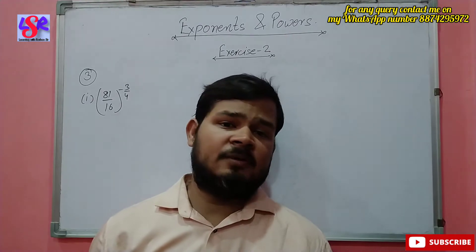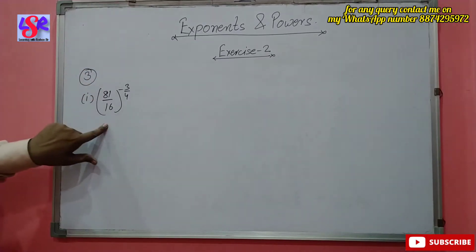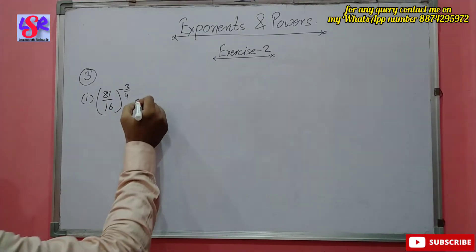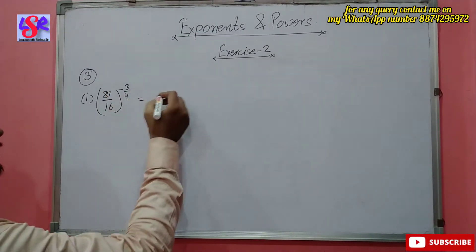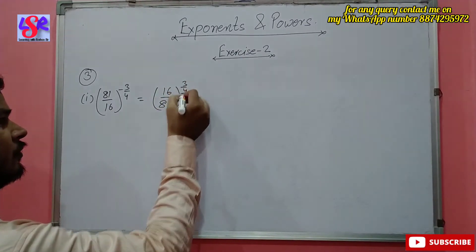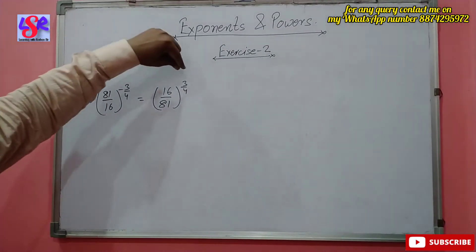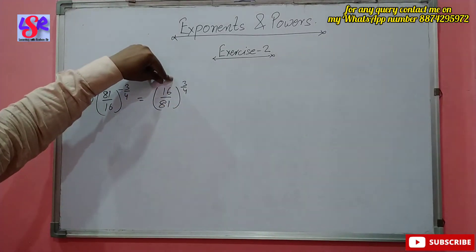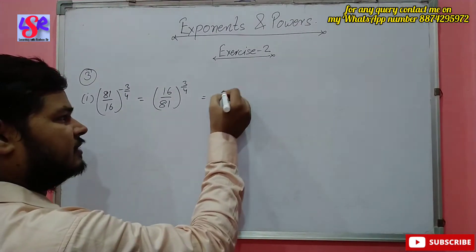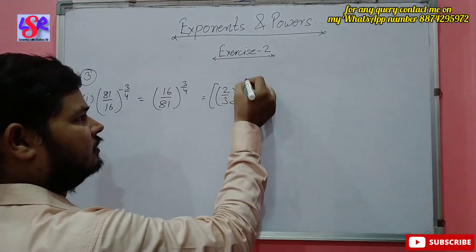In question number 3, we have to find the multiplicative inverse of the given expression. The first part is 81 upon 16 to the power minus 3 upon 4. First of all, we are going to remove this minus sign by making a reciprocal, giving us 16 upon 81 to the power 3 upon 4. Now 16 is 2 to the power 4 and 81 is 3 to the power 4, so this is written as 2 upon 3 whole to the power 4, and the outer power is 3 upon 4.